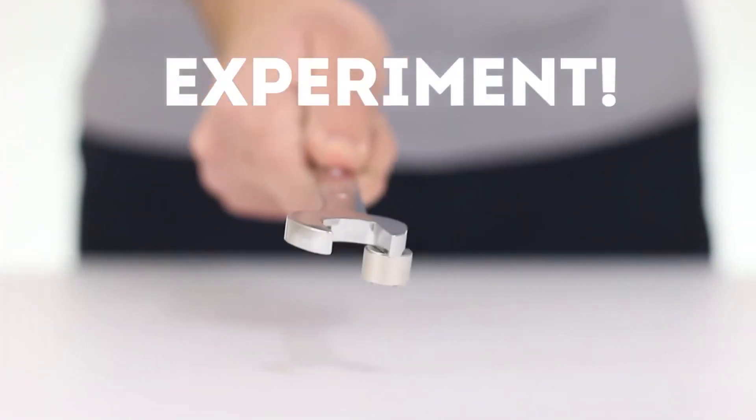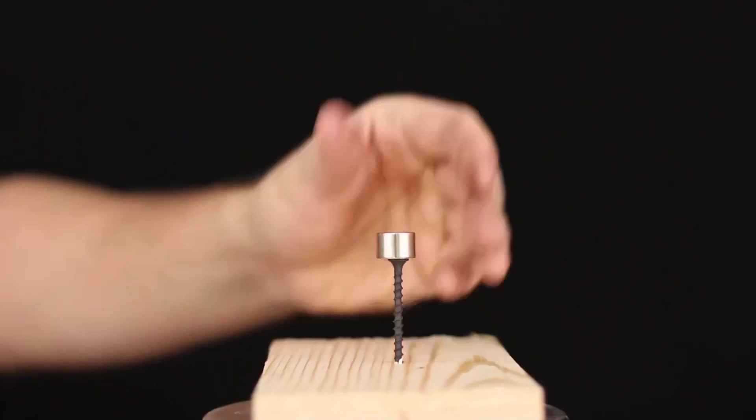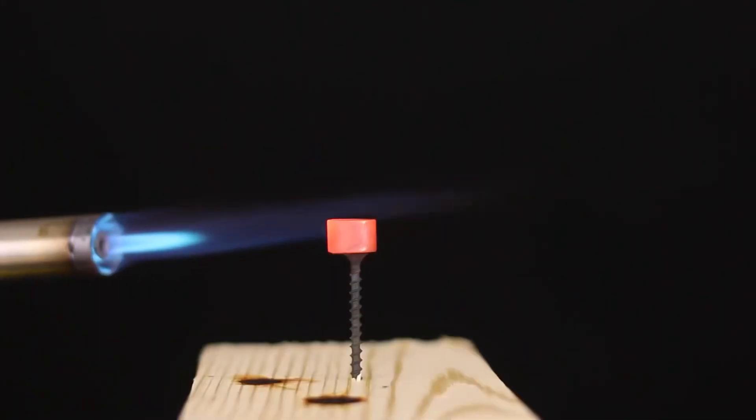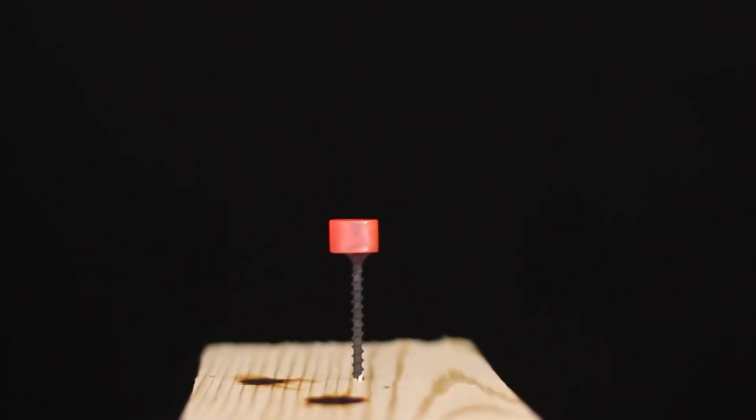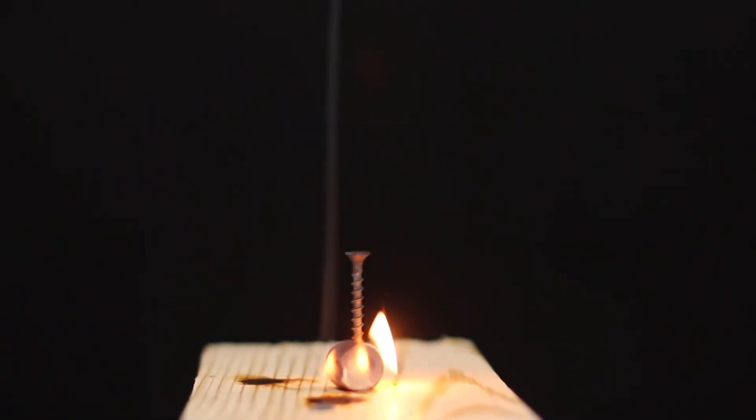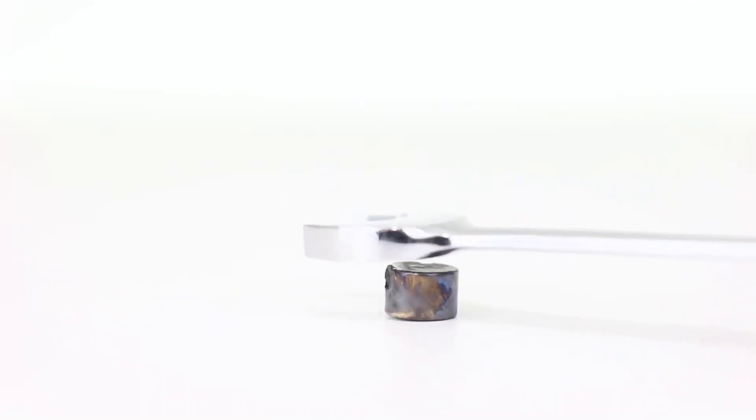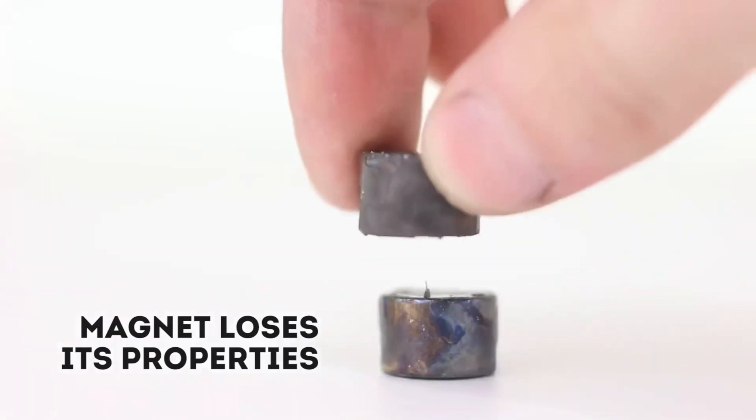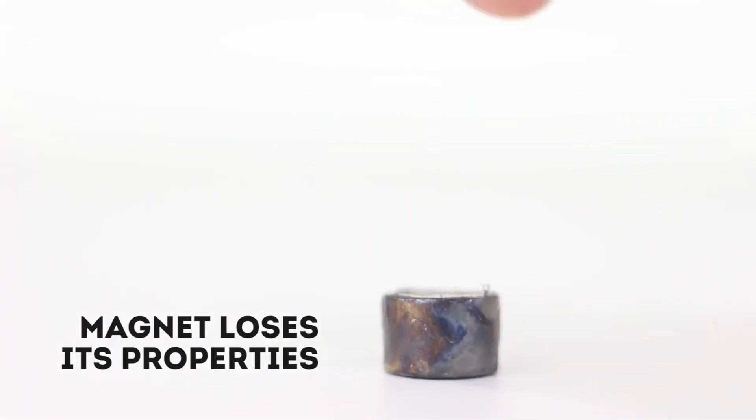Let's take an ordinary magnet. As you can see it is perfectly attracted to iron. But what if we heat it up the same way we heated the needles? After the magnet has become so hot it's no longer attracted to iron. But even after it cools down the magnetic properties will not return. Even another magnet can't move it anymore.